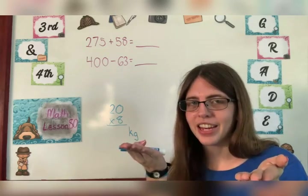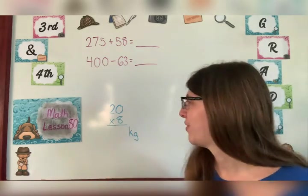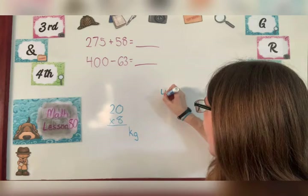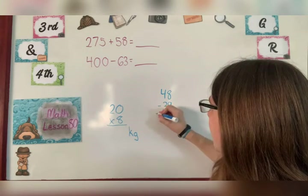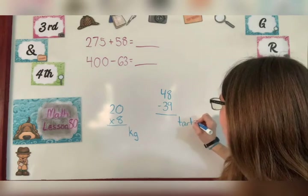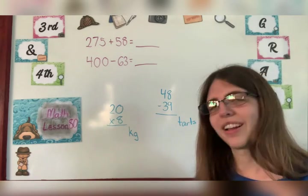Subtract. Very good. So our problem tells us we started with 48. People ate 39. How many are left? So you start with 48. You take away the 39 that people eat. And your answer is how many tarts were left?